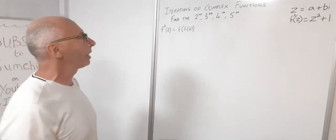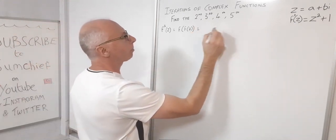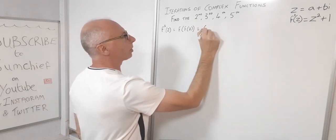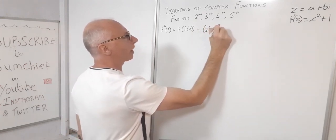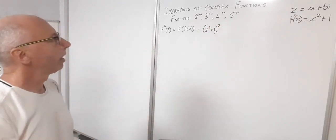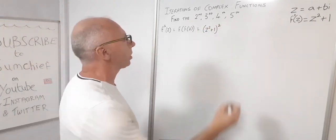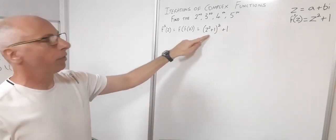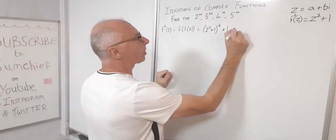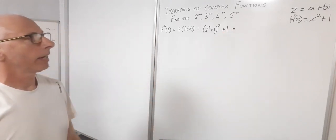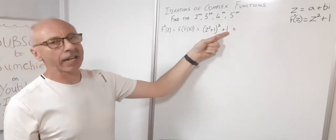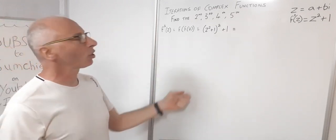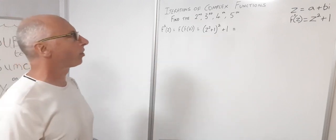Basically what we do is apply the z² + 1 rule to z² + 1. So z is replaced by z² + 1, and we square that, then add the constant 1. We need to FOIL out z² + 1 and remember to add 1 at the end. In a previous video I forgot to add this 1, which made all the rest of the iterations incorrect, so this time I'll be careful.